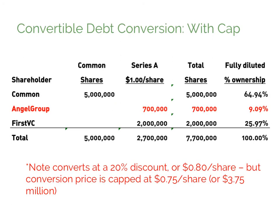Now let's look at how these calculations are affected by a price cap. We've modified our example to add a price cap of $3.75 million. When you divide the cap by the 5 million shares outstanding, that translates to a $0.75 per share price cap. When the automatic conversion occurs, the angels pay the lower of their discount on the Series A price — which we calculated to be $0.80 per share — or their price cap of $0.75 per share.